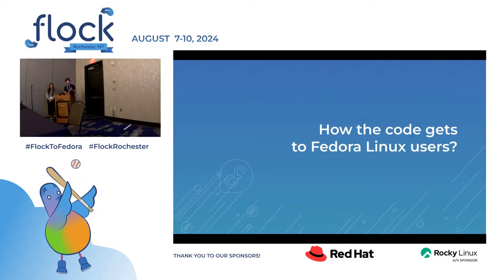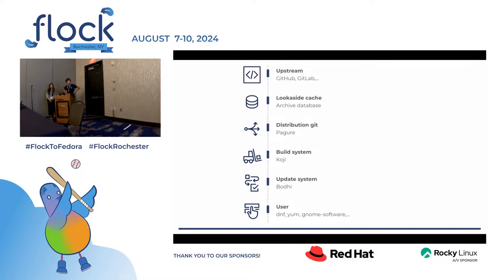Let's take a look at how code gets to Fedora Linux users. Starting from the top, there is an upstream project on GitHub, GitLab, or maybe somewhere else. Then we need to take the release, put the archive to the lookaside cache — maybe this won't be relevant much longer — and the new version needs to be also reflected in dist-git, currently Pagure. When changes are made in the spec file in dist-git, we need to trigger a build in Koji. If we have a successful build we can move to Bodhi and create an update, and if the karma voting is successful, the new version finally gets to the user via DNF, GNOME Software, or anything else.